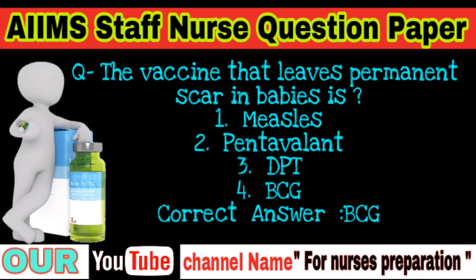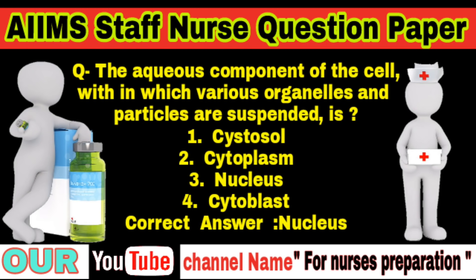Question: Which vaccine leaves a permanent scar in babies? Options: Measles, Pentavalent, DPT, BCG. Correct answer is BCG. Question: The aqueous component of the cell within which various organelles and particles are suspended is — cytosol, cytoplasm, nucleus, cytoblast. Correct answer is cytosol.